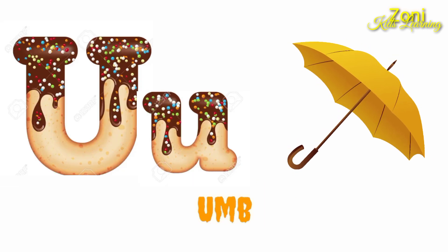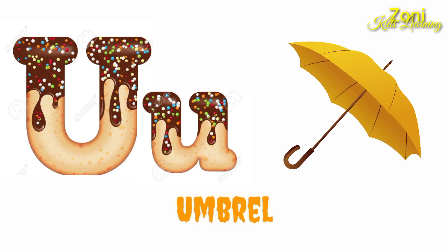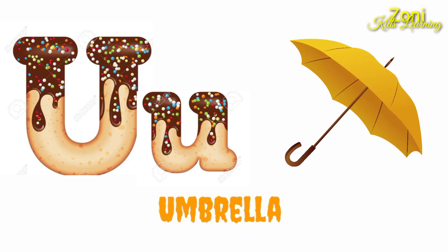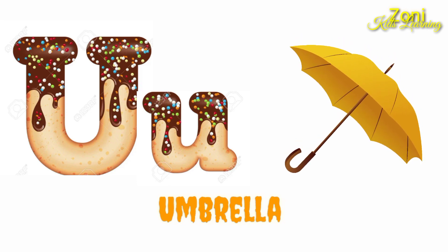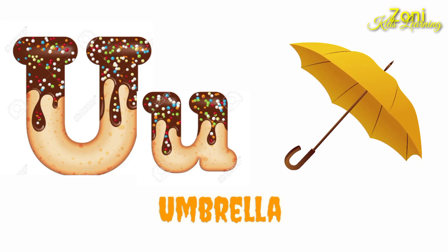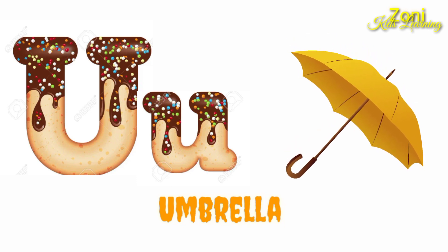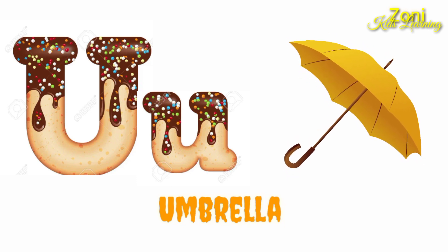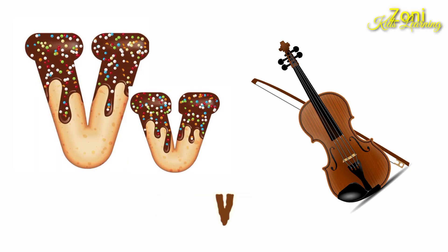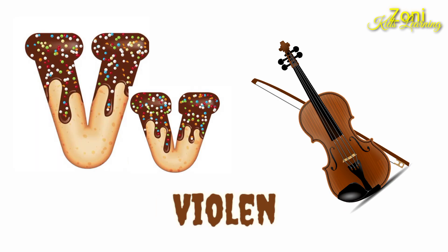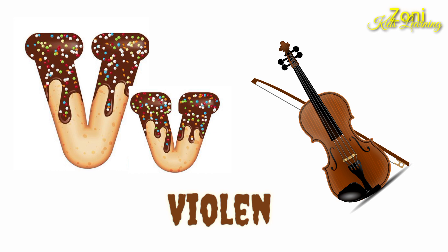U is for Umbrella. a-a-umbrella. Umbrella. V is for Violin. v-v-violin.